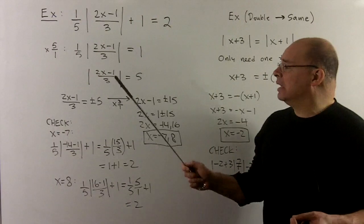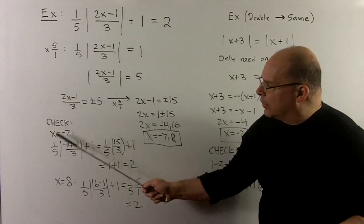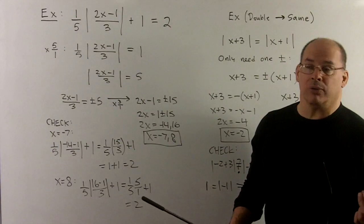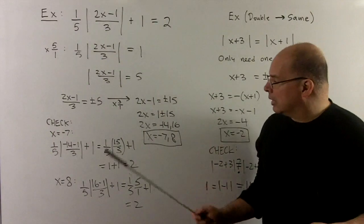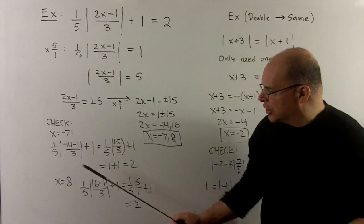And then 15 over 3 is going to cancel with the 1 fifth to give us a 1, plus 1 gives us the 2 that we're looking for. Likewise, when we put in for the solution of 8, and that'll check out also.